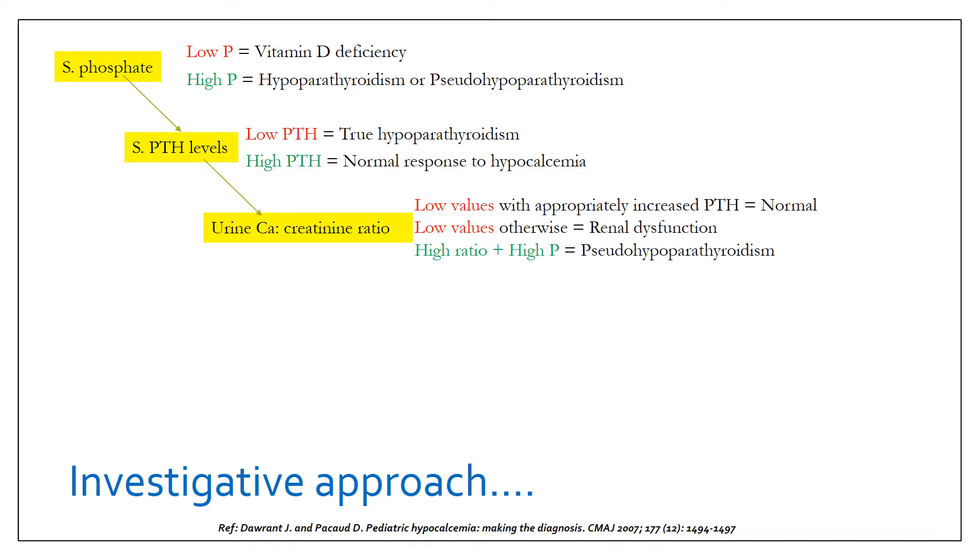A high ratio, high urine calcium creatinine ratio along with high serum phosphate in the blood would suggest tubular unresponsiveness, which in turn means it is a case of pseudohypoparathyroidism.